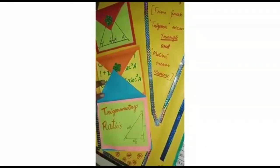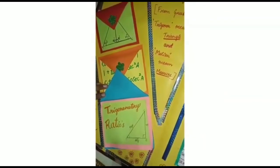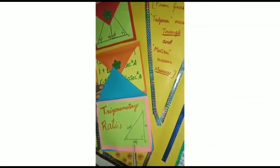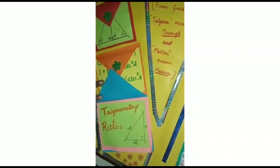And this is Trigonometric Ratios. A, B, C. Side opposite to angle A, side adjacent to angle B. And this is hypotenuse.